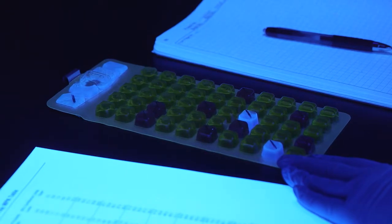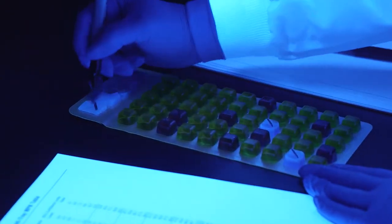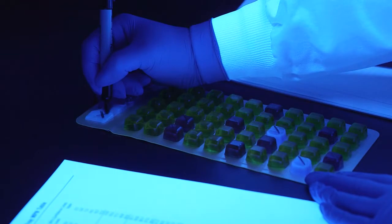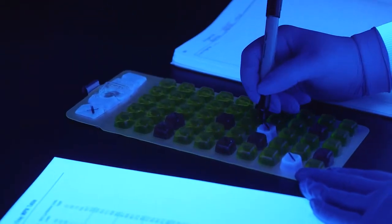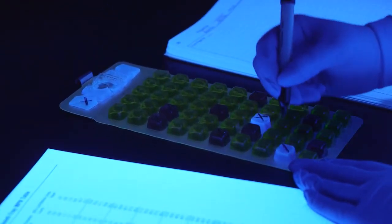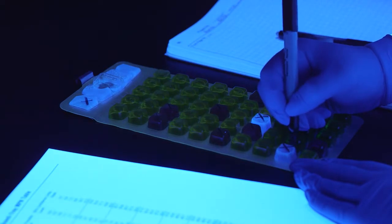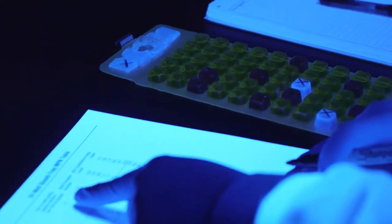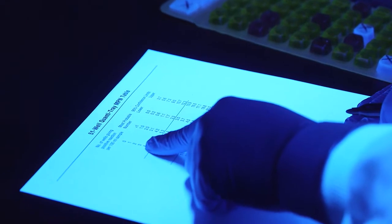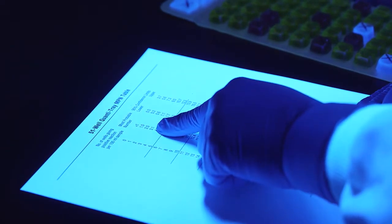To determine the number of E. coli, view the QuantaTray with a UV lamp in a dark environment, shining the light away from your eyes. Keep the light within 5 inches of the tray. Mark each fluorescent well with a permanent marker. Count the fluorescent wells and then refer to the corresponding positive well line on the MPN table.